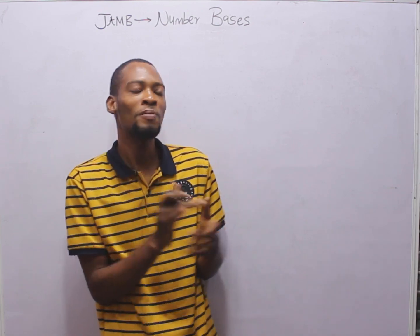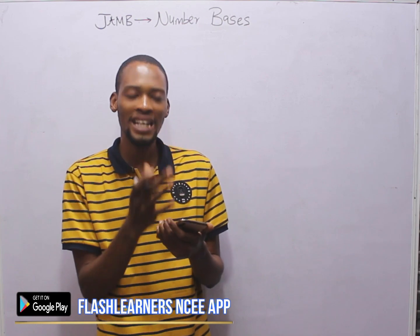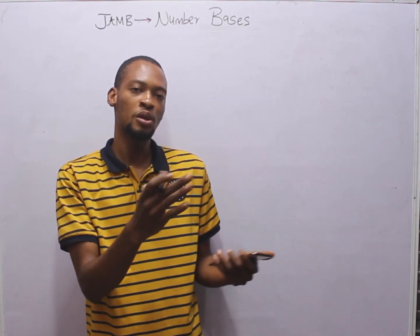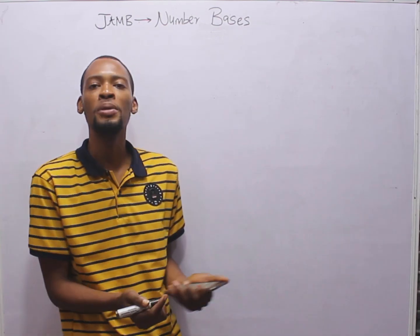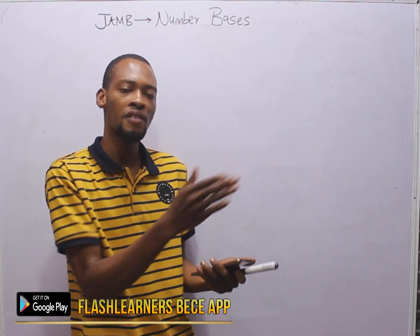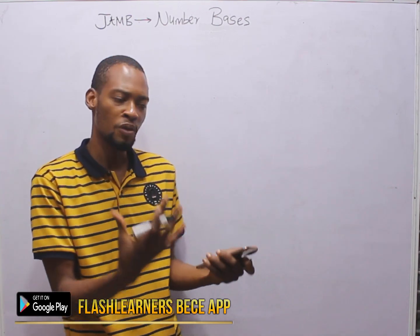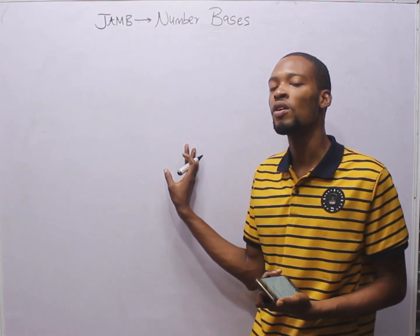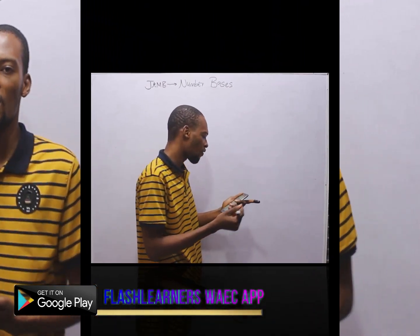These questions are gotten from the Flash Learners JAMB CBT application. I simply install the app, select the topic I want to study — it gives you an option to choose a topic. I selected number bases to get all the questions on that topic. I filtered out similar ones to cover the different ways a question can come. Get the Flash Learners JAMB CBT app on Google Play Store or visit flashlearners.com.